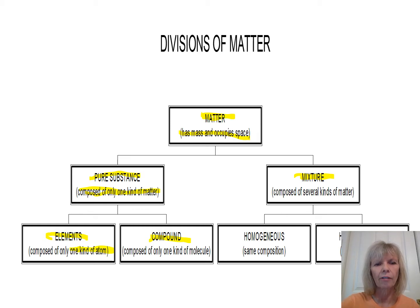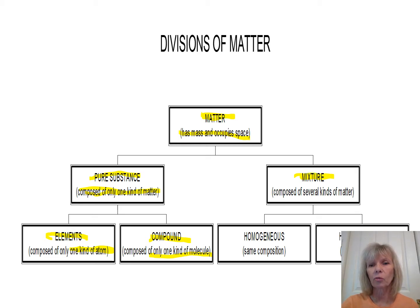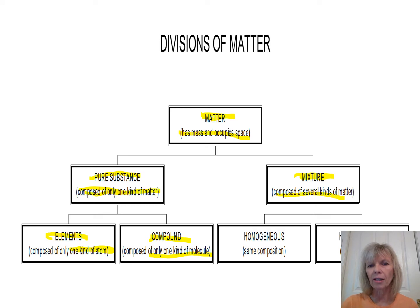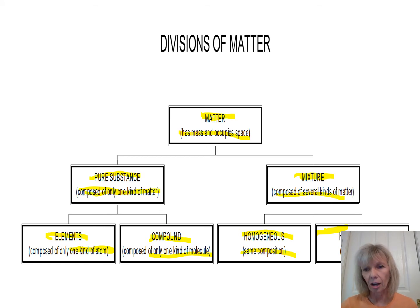Elements are composed of atoms. Compounds are formed when you break matter down to the smallest piece that still behaves like that substance — that's called a molecule. Molecules are two or more different atoms combined together. Mixtures are when you combine two or more pure substances. Mixtures can be classified as homogeneous, where they look the same throughout and have the same composition, or heterogeneous, where two or more pure substances are mixed together and it does not look the same throughout.